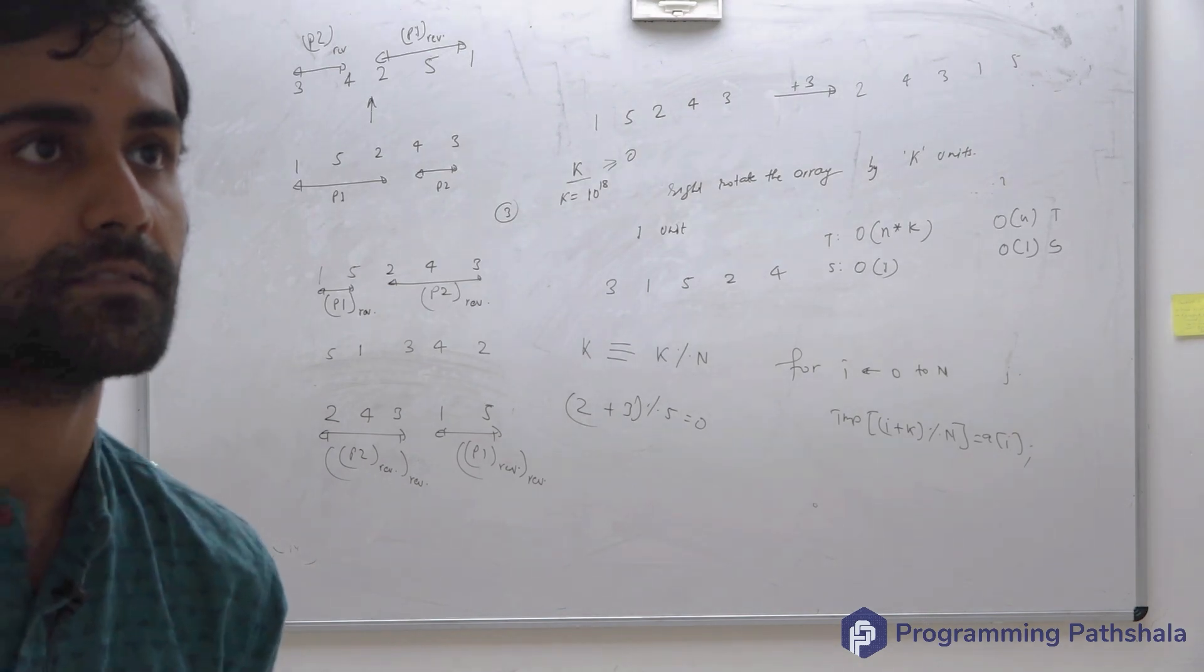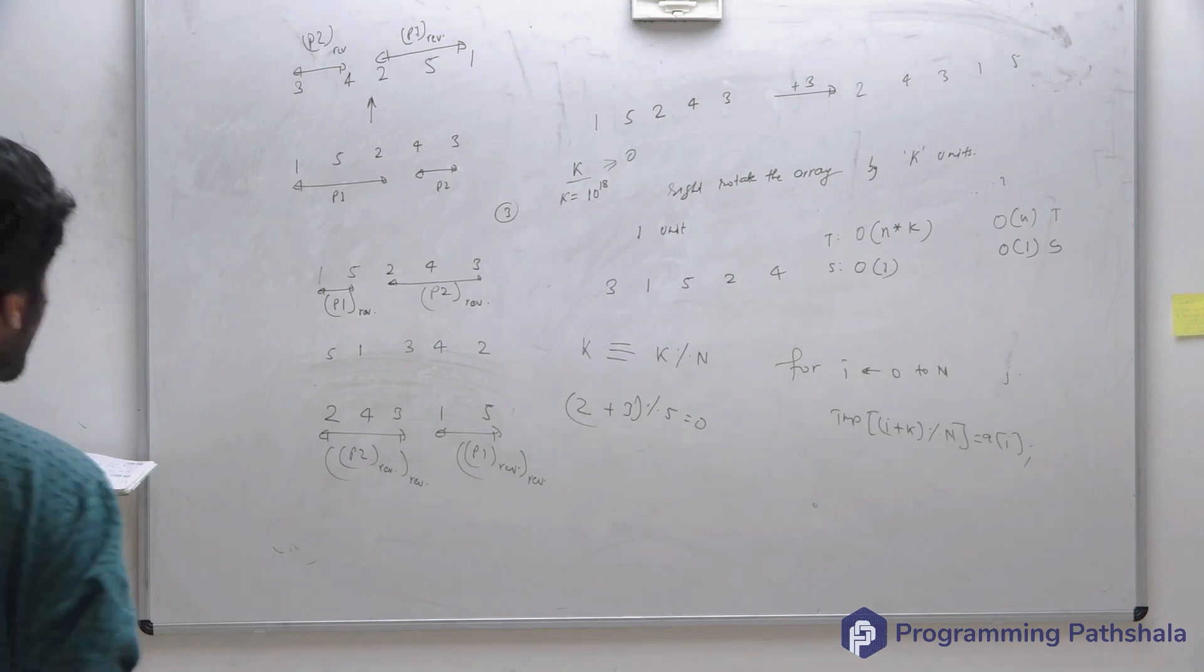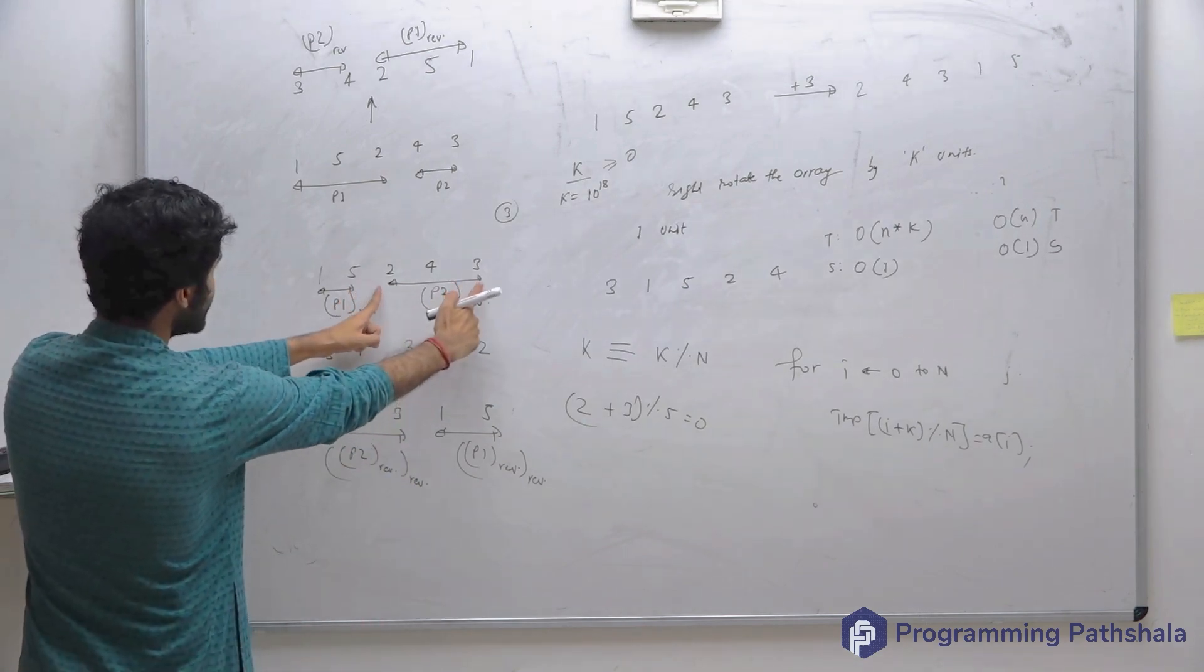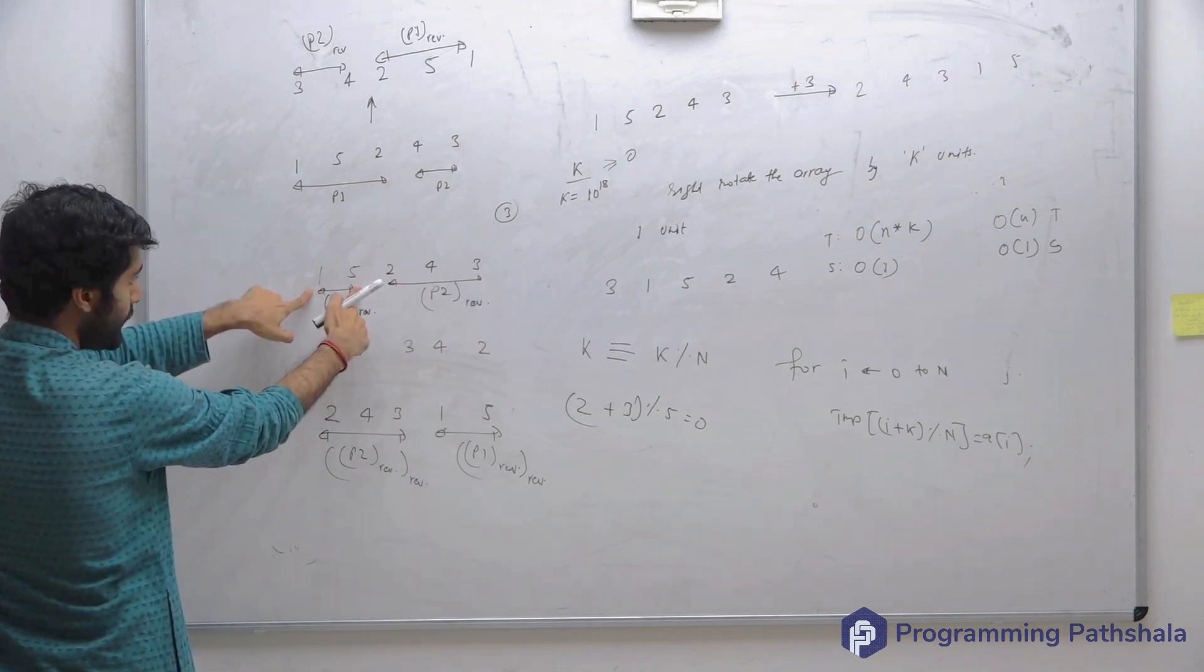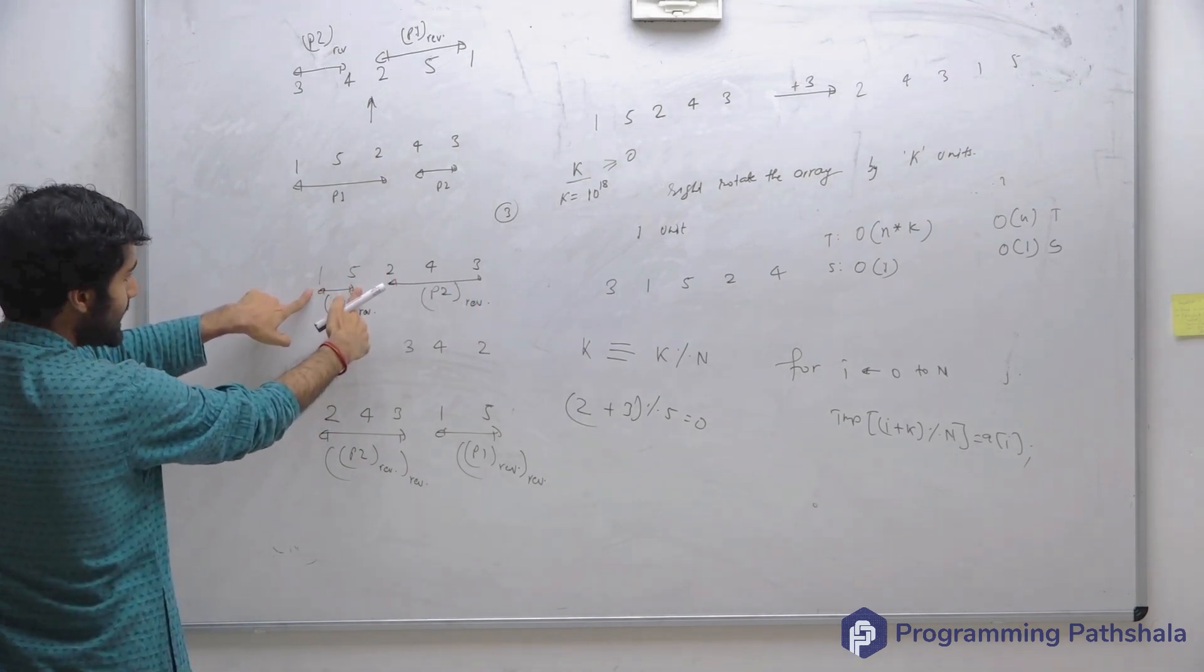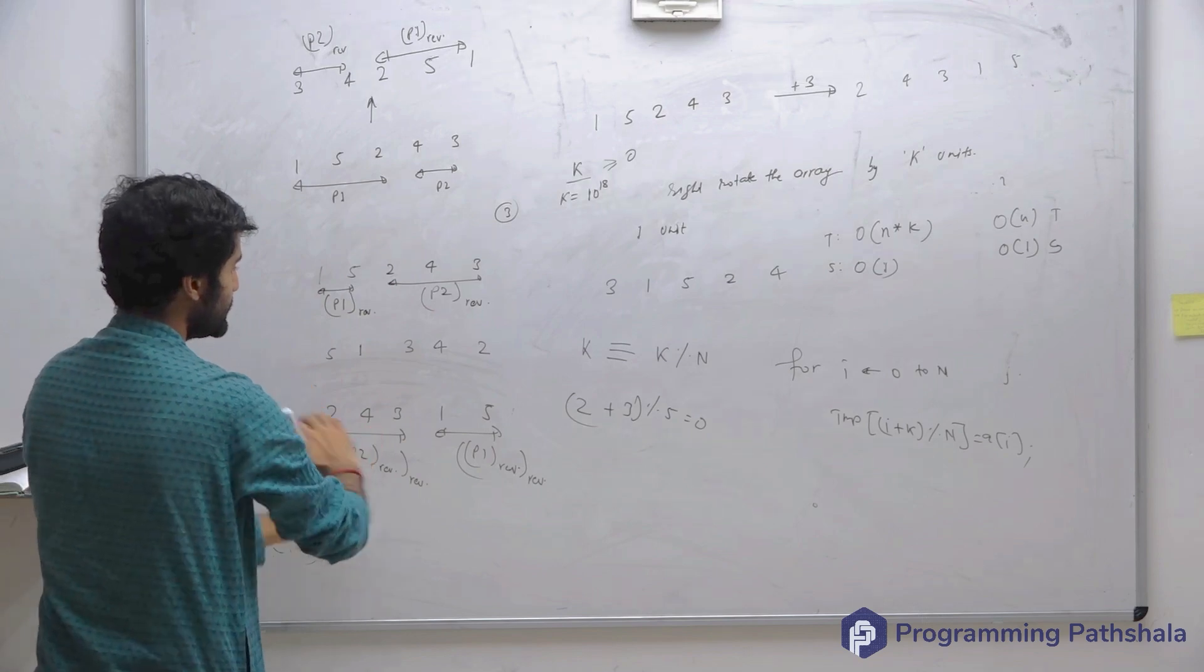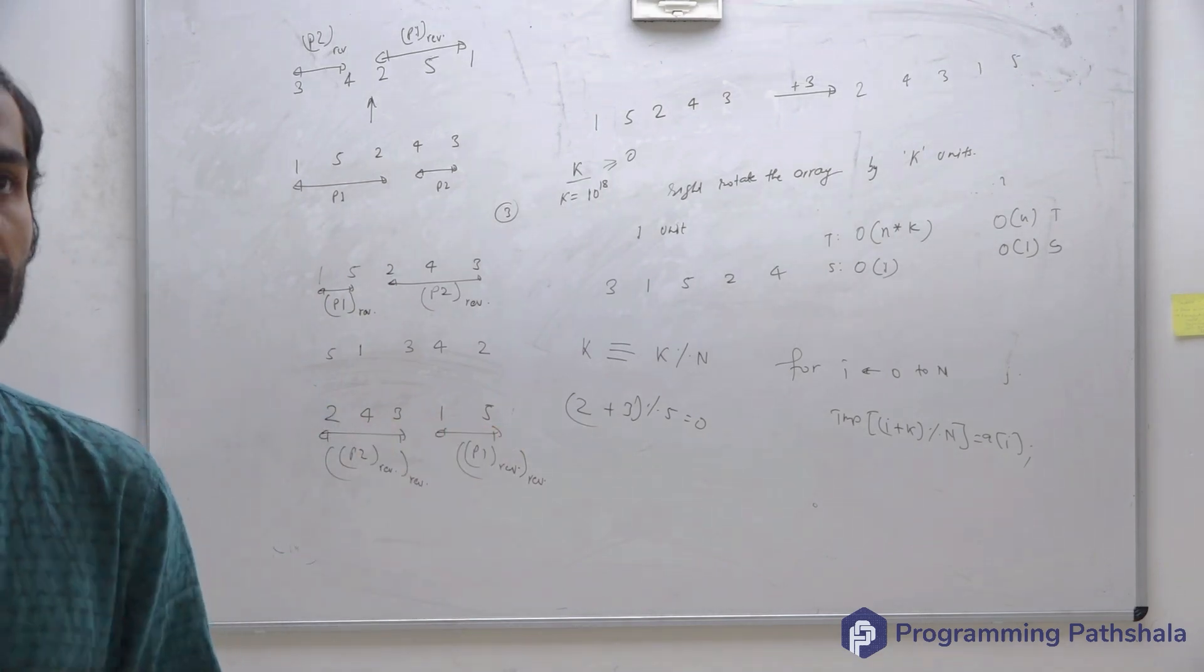Can you do it? Very easily, right? What you can do is you can just reverse the last k elements, and then you can also reverse the first n minus k elements, and then you can reverse the entire array. Your job is done.